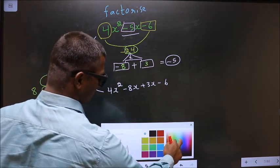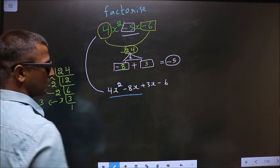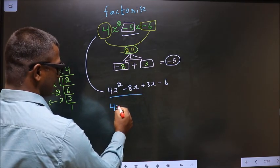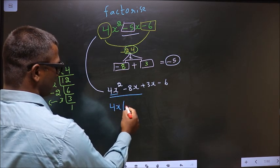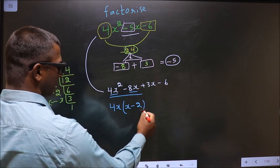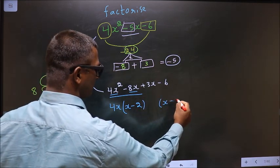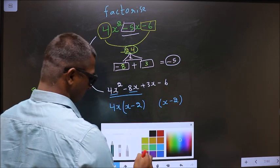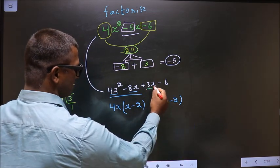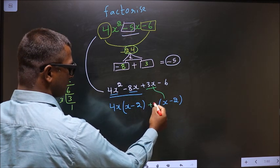Now, what you can take out common from these two terms is 4x. So here you are left with x and here you are left with minus 2. You got x minus 2. So here also, you should get x minus 2 inside.